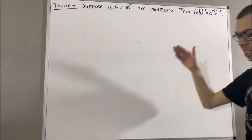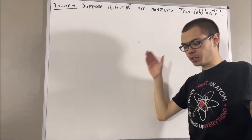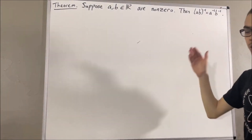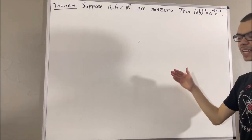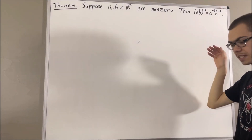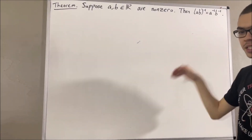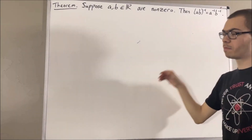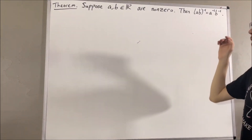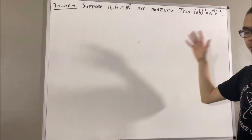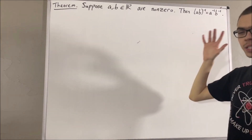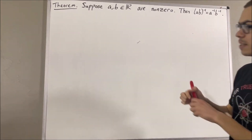Now, in this series, we are using a list of 10 axioms for the real number system, and I'll leave that list of axioms in the description below. In this video, we are going to be using the following axioms.